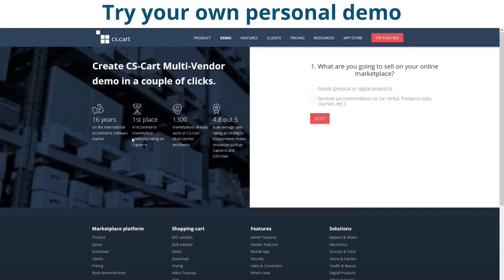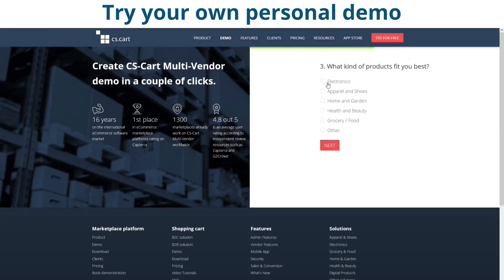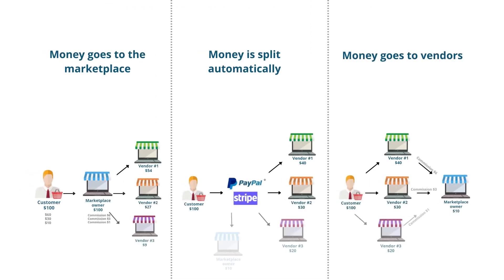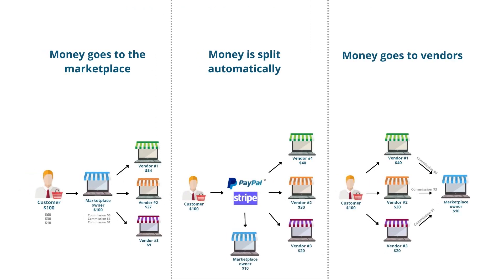You can always try it yourself by going to cscart.com and getting your own personal demo — I'll attach the link in the description below. In this video, we've learned three models of money flow in a marketplace. If you want to know more about each of these models, you can find the videos on our YouTube channel.